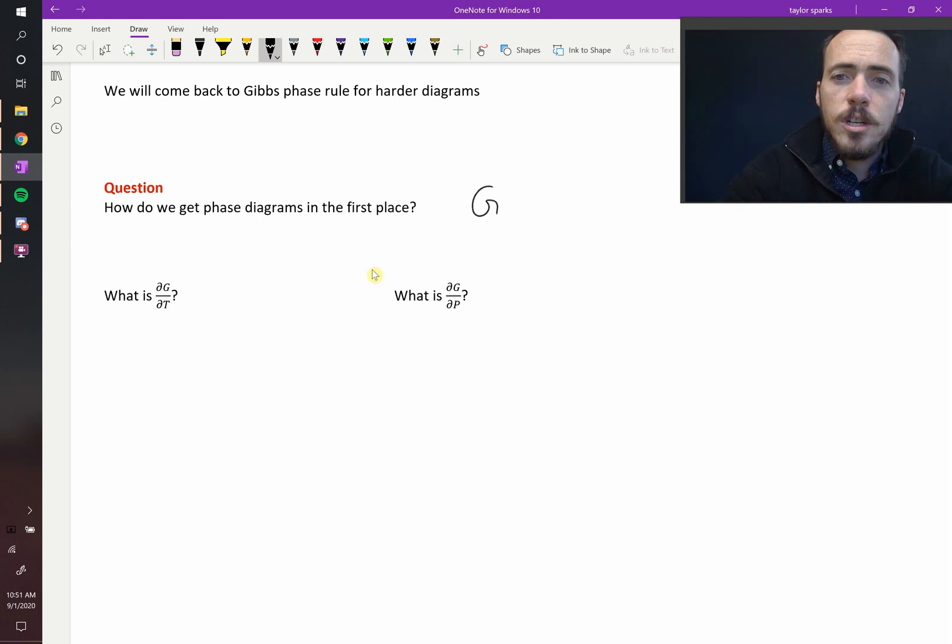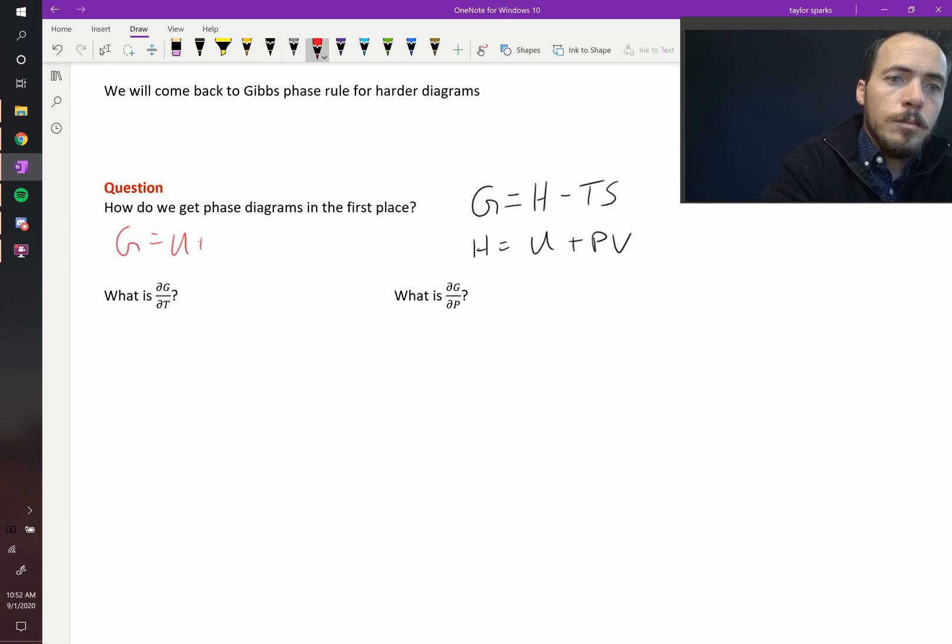So first off, let's remember that G is equal to H, our enthalpy, minus T times S, our entropy, and we know that H, enthalpy, is equal to U plus PV. So our full expression for G would be U plus PV minus TS.